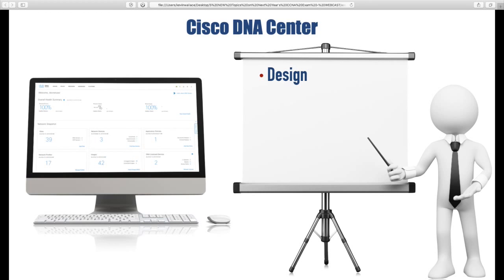First, there is Design. One of the things we'll see is how we can use DNA Center as a design platform. If you've got a big multinational network, you can start out with a map of the world, define different areas, define buildings within those areas, import floor plans, and show where every network device is installed. You can have your entire enterprise network drawn out, documented, and diagrammed inside Cisco DNA Center. We can also use it to apply policy configuration — including security like access control lists and groups, and one of my favorites: quality of service policies.